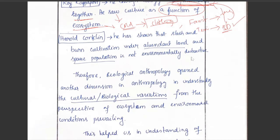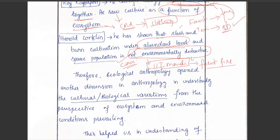Harold Conklin showed through case studies that slash and burn cultivation, under conditions of abundant land and sparse population, is not environmentally destructive — it is actually beneficial. Similarly, a recent study suggested that controlled forest fires help in the regeneration of forests, because the heat cracks nuts and seeds, aiding plant germination and regeneration.